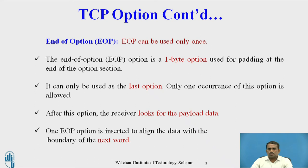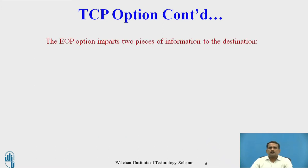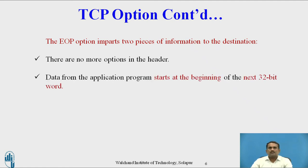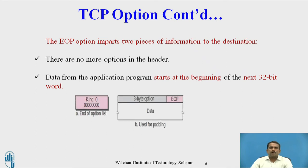After adding the first data, if the user wants to add the next byte or data, they check the boundary of the next word. The end of option conveys two pieces of information to the destination: there are no more options in the header, and the data from the application program starts at the beginning of the next 32-bit word. The block format of end of option contains a kind field set to 0, and the end of option is a 3-bit option. After end of option list, it is used for padding, and the user data follows.